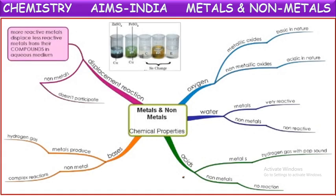Coming to chemical properties of these metals and nonmetals. When metals react with oxygen, they form metallic oxides which are basic in nature. When nonmetals react with oxygen, they form nonmetallic oxides which are acidic in nature.